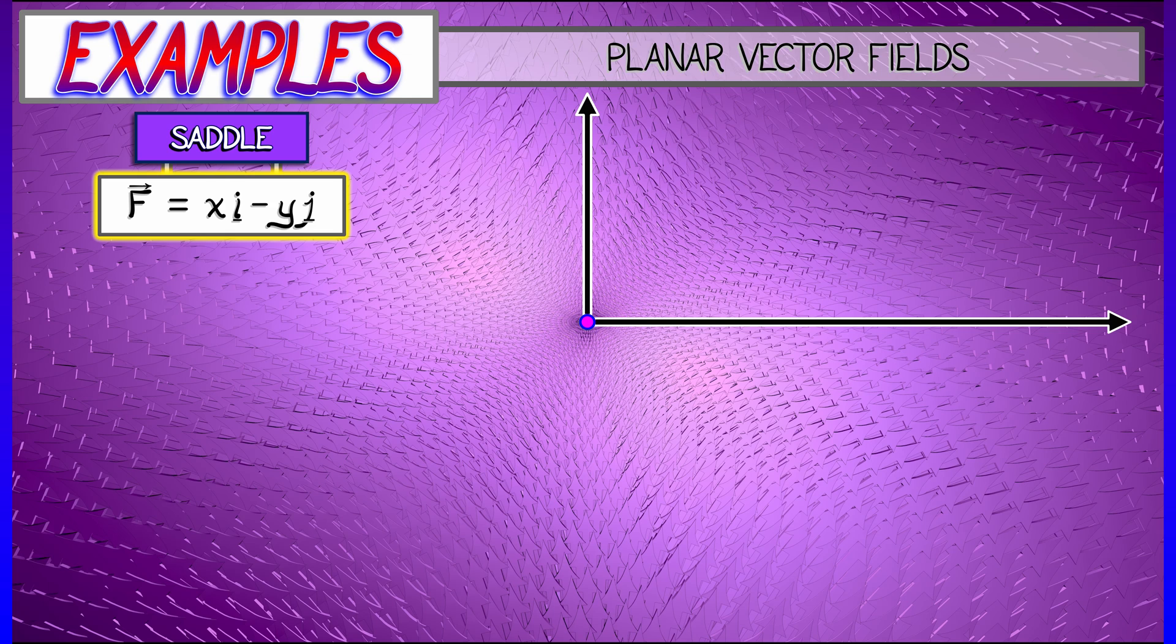And this is called a saddle precisely because you have these two different behaviors. You're moving in along the one direction. You're moving out along the other direction. And what happens everywhere else? Well, that's worth contemplating.